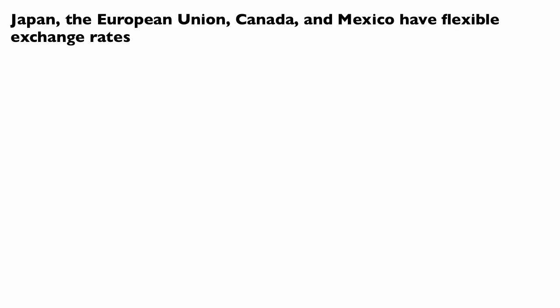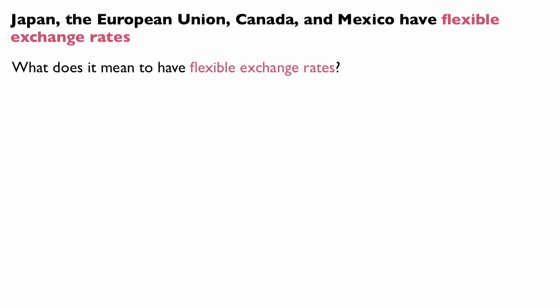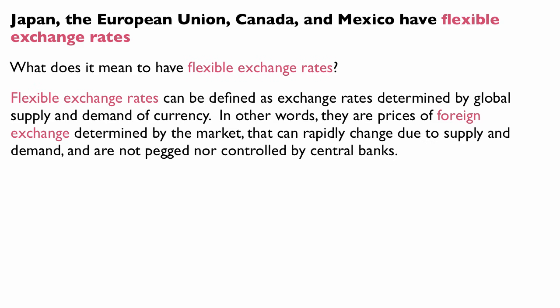Japan, the European Union, Canada, and Mexico have flexible exchange rates. Flexible exchange rates can be defined as exchange rates determined by global supply and demand of currency. They are prices of foreign exchange determined by the market that can rapidly change due to supply and demand, and are not pegged nor controlled by central banks.